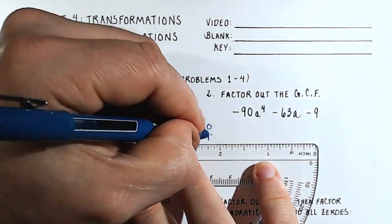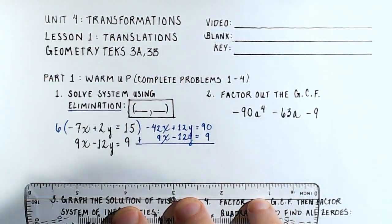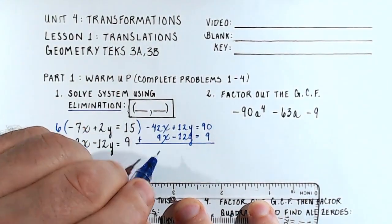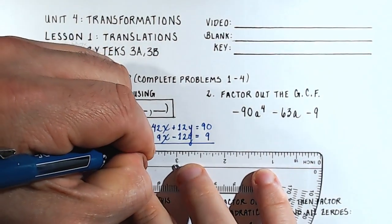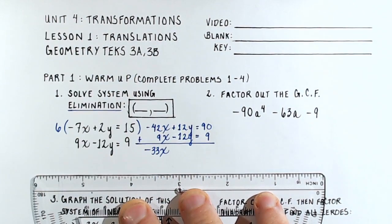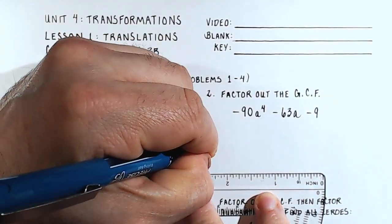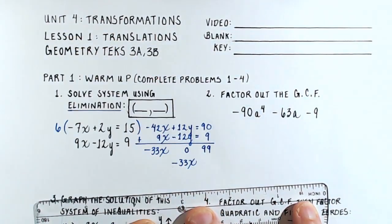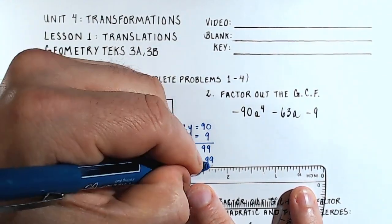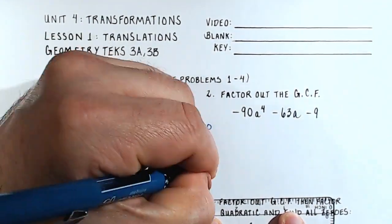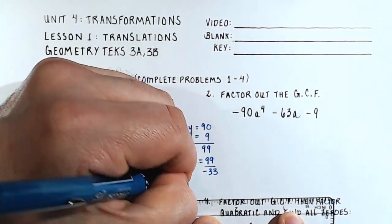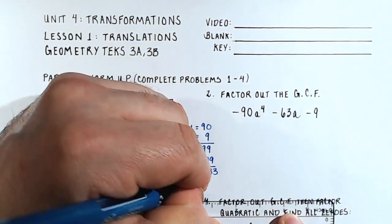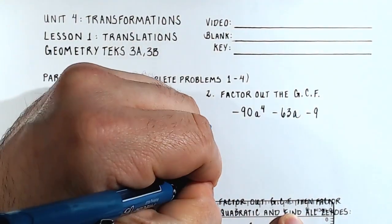Now we'll draw a line underneath both equations and add them together. Negative 42x plus 9x is negative 33x. 12y minus 12y is 0. And 90 plus 9 is 99. So we have negative 33x equals 99. I can isolate x by dividing through by negative 33, leaving x equal to 99 divided by negative 33, or negative 3.